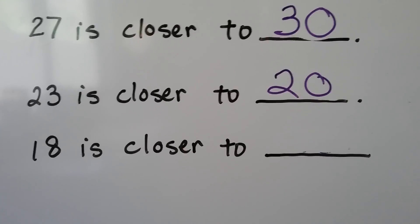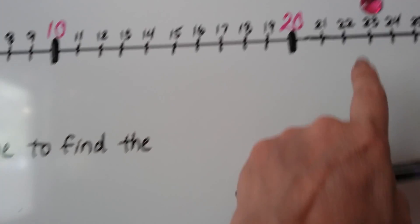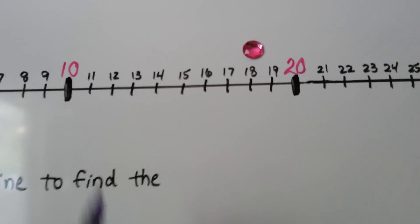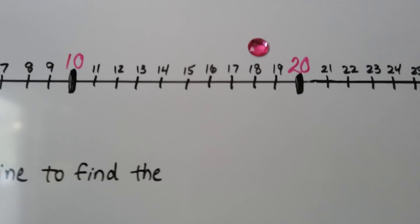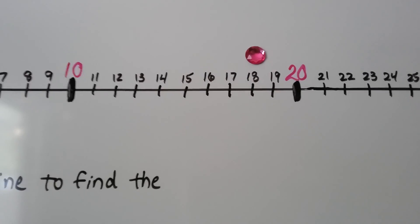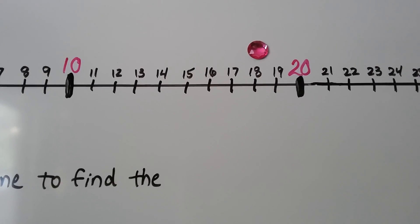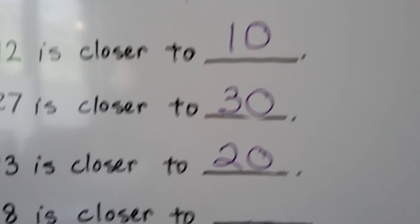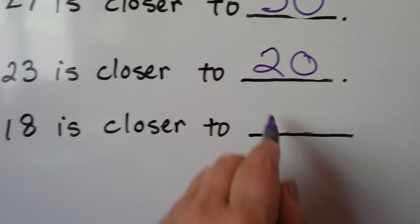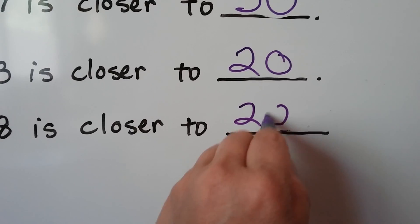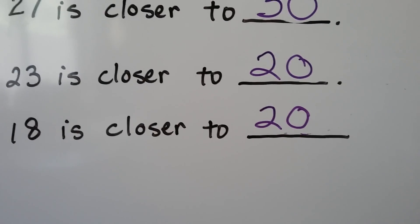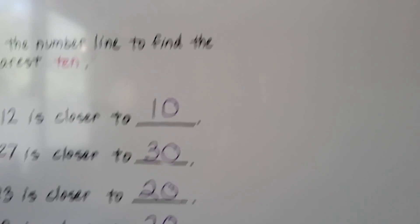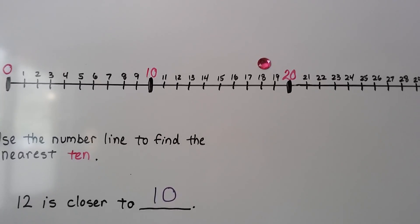How about 18? Let's find the 18 — it's right here. It's in between 10 and 20, and we round to 20. We just look for the one that it's closer to.